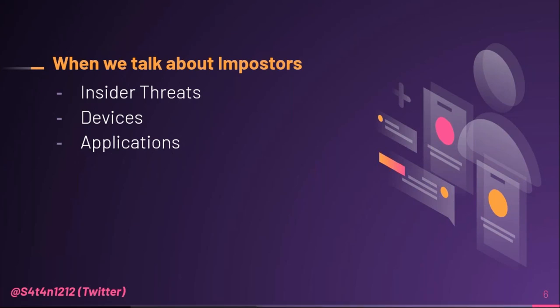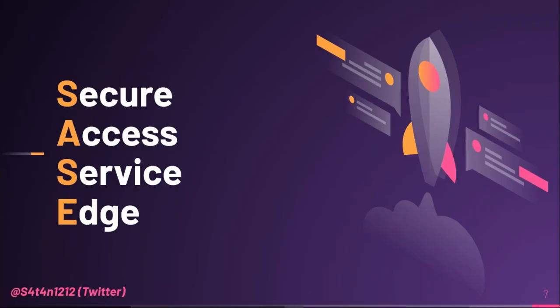So insider threats can be of this unintentional type as well — zero trust must be in place to prevent any mishap on the network. Devices can be both trusted and infected, and applications can be both trusted and compromised. There can be a spy hiding in our network that we don't discover for two or three years, as we have seen in recent supply chain attacks.